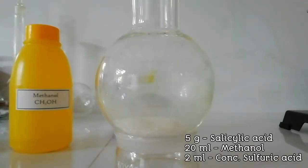First, 5 grams of salicylic acid was added to a round-bottom flask. Then, 20 milliliters of methanol and 2 milliliters of concentrated sulfuric acid was added.